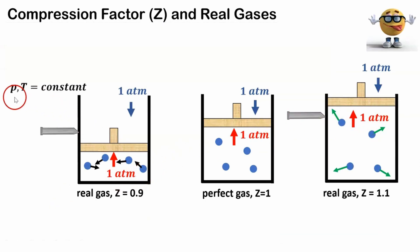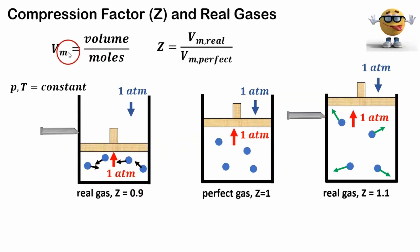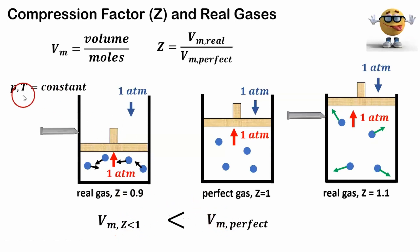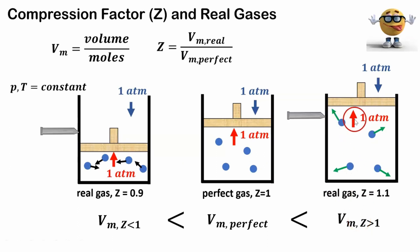Now let's look at another scenario where pressure and temperature are constant. We define the molar volume as the total volume divided by the number of moles. The main equation for the compression factor Z is the molar volume of the real gas divided by the molar volume of the perfect gas. If the compression factor is less than one, the molar volume of the real gas is going to be less than the molar volume of the perfect gas, assuming constant pressure and temperature — same number of moles, but lower volume. On the other side, if the compression factor is greater than one, the real gas will have a higher molar volume because of those repulsive forces.